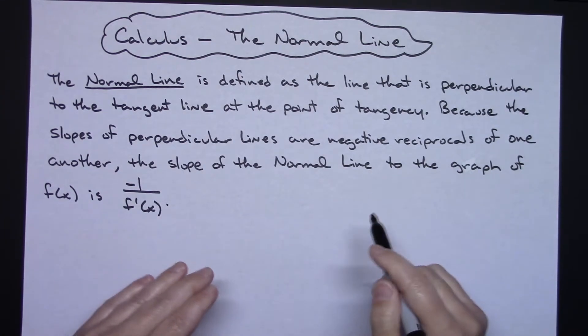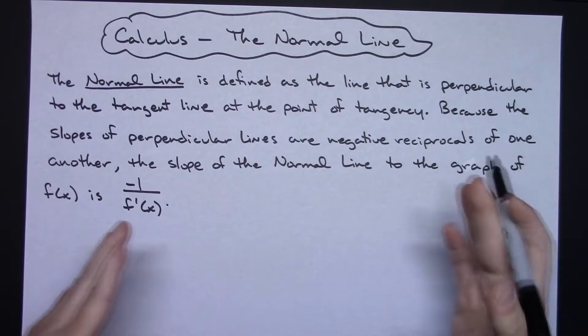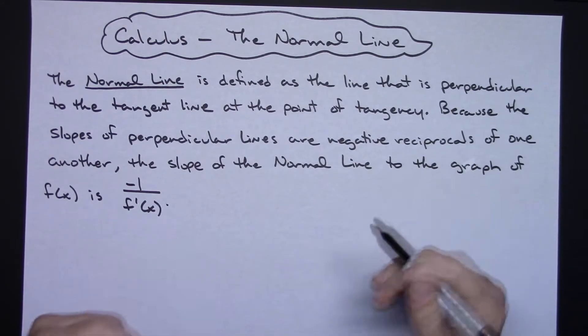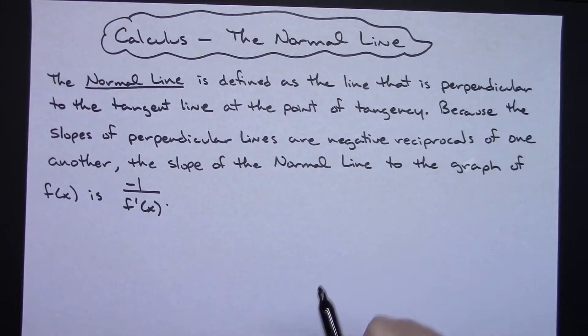In this video I'm going to be taking a look at the normal line. We're going to give a definition of the normal line, talk about the slope and how you find the equation, and then work out one real simple example of this.